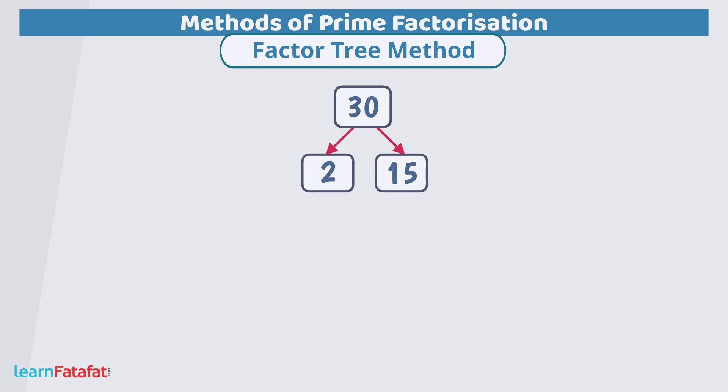Now, we will check if these numbers are prime numbers. If not, then we will extend the branches. Here 2 is prime, so no need to extend its branches. However, 15 is not prime. We can express it as 3 multiplied by 5.